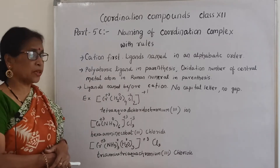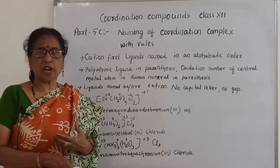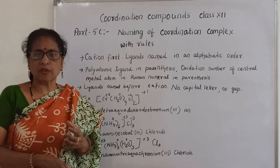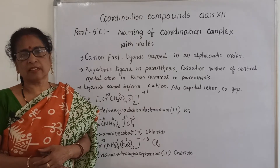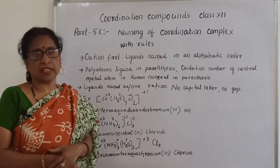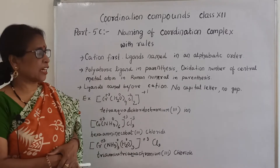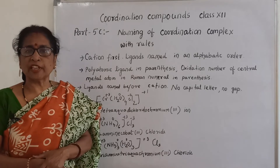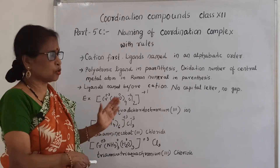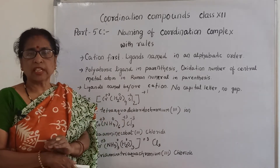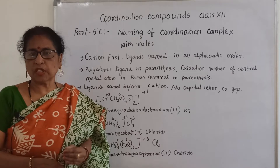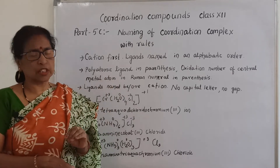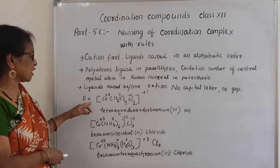Rule 5: Ligands are named before the metal cation — first write the ligands with their count, then write the metal name. Rule 6: No capital letters and no gaps are used within the name of the coordination complex. There is no gap and no capital letter inside the coordination complex name.